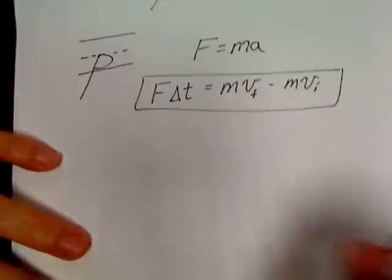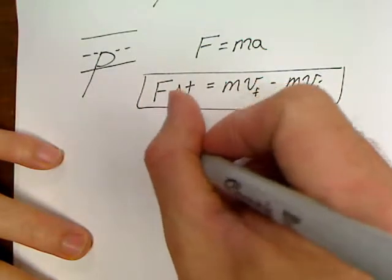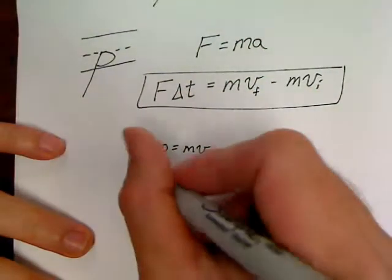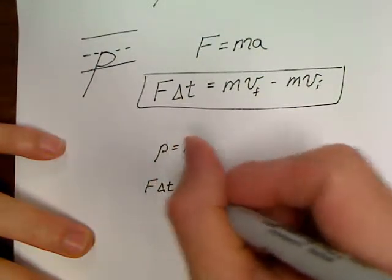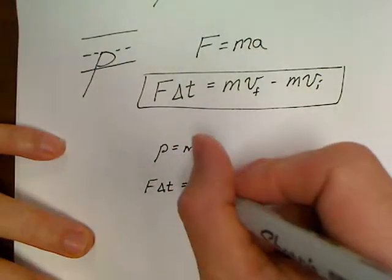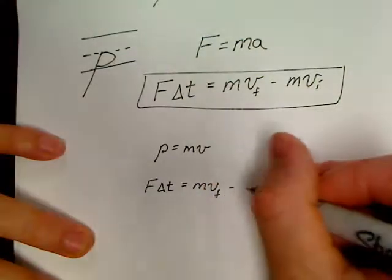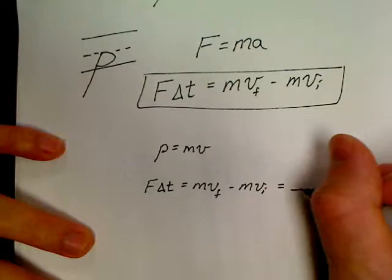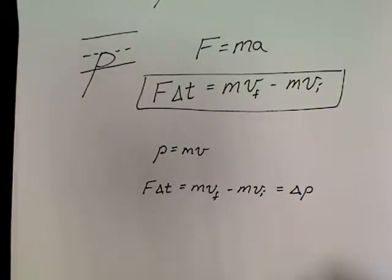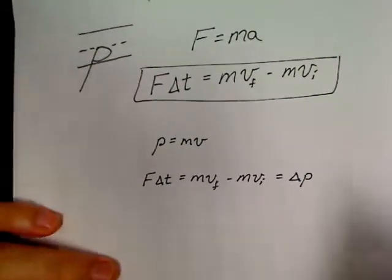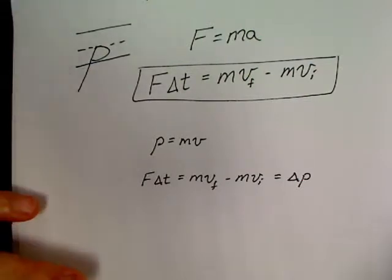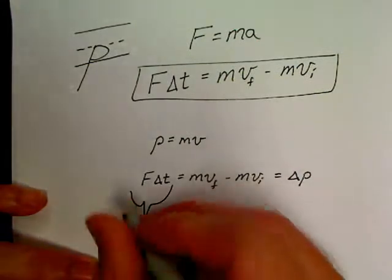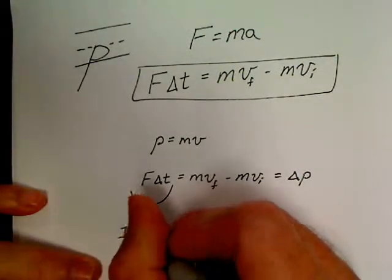So our two equations, and this is all we need right now: momentum is equal to mass times velocity, and we can write that F∆t is known as mv_final minus mv_initial, which we could also just write as equal to a change in momentum if we wanted to. We also know this: F∆t is what's known as impulse.